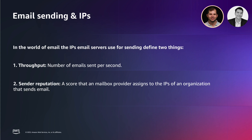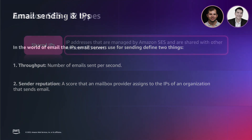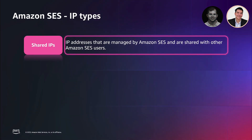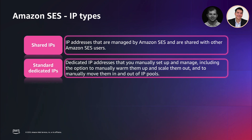With that in mind, Tristan will talk about the different IP options Amazon SES offers. Amazon SES supports both shared and dedicated IPs, which come in three different flavors: standard, managed, and bring your own IPs. Firstly, since shared IPs are used by multiple Amazon SES customers, they already have an IP reputation. For standard dedicated IPs, these are IPs that you can lease directly from Amazon SES and you are the sole sender. These IPs do not have a previous sender reputation, so you should gradually increase the amount of emails sent from those addresses before using them to full capacity.